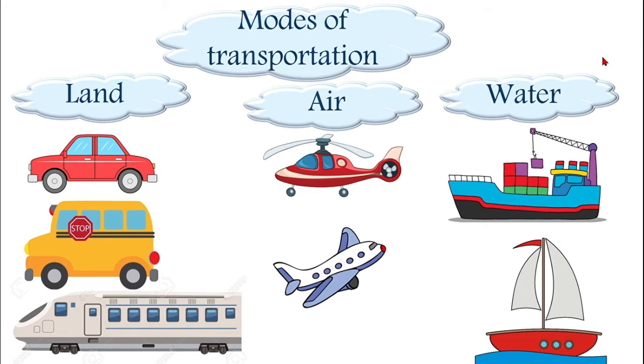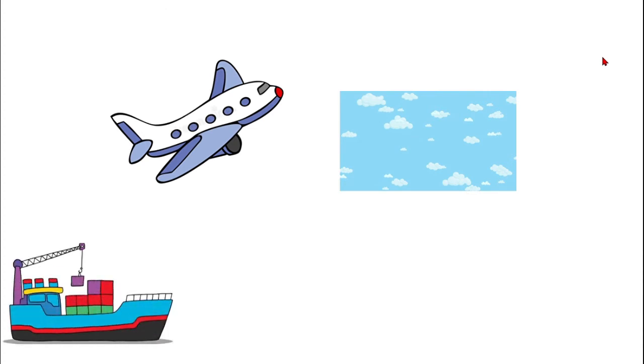We can travel in the air using a helicopter or airplane. Also, we can travel in the water using a ship or boat. Look — this is an airplane. Airplanes fly in the air. This is a ship. Ships sail in the water.